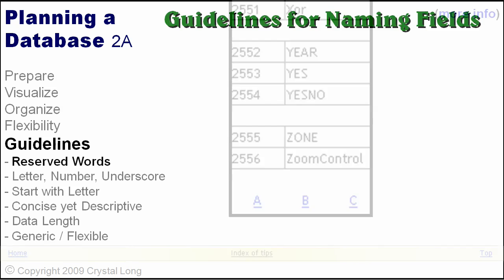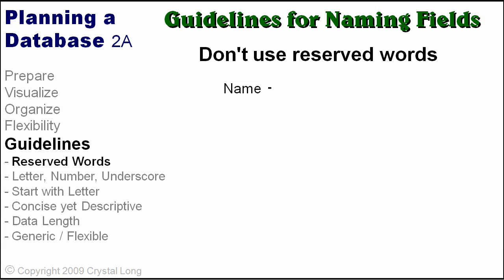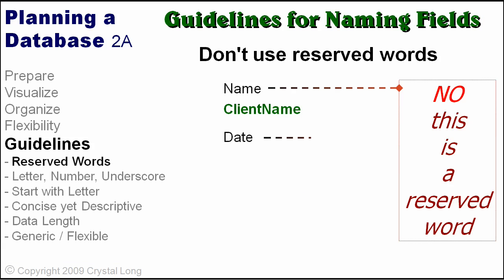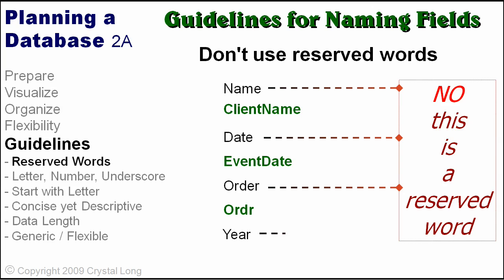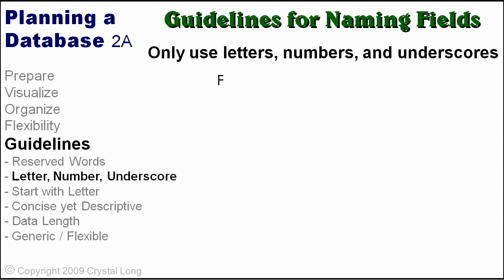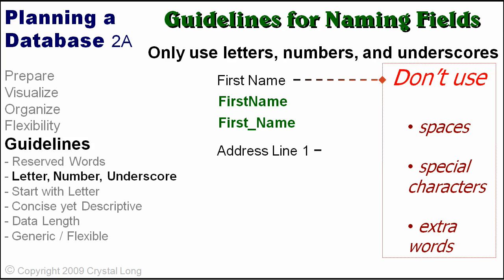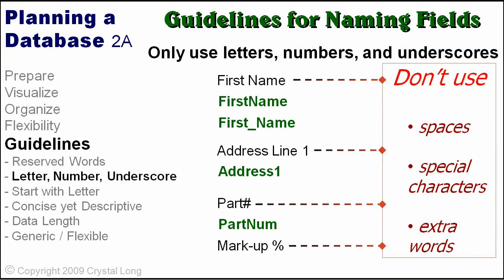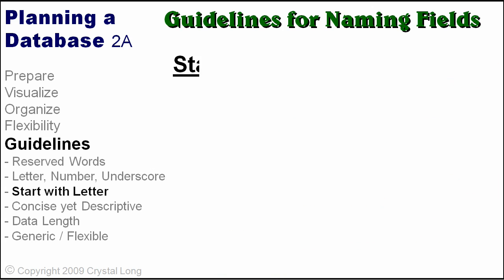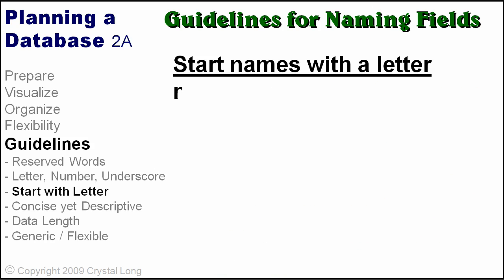Don't worry — you'll get to know the words that you might be tempted to use. And as you learn more about Access, you will recognize many words without having to look them up. Only use letters, numbers, and underscores. Don't use spaces, special characters, or extra words. Start names with a letter, not a number.